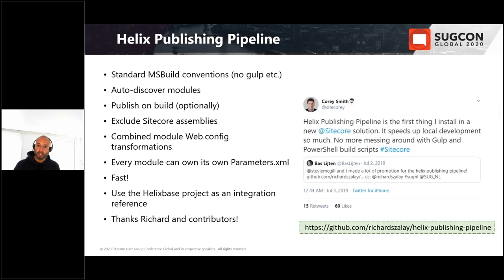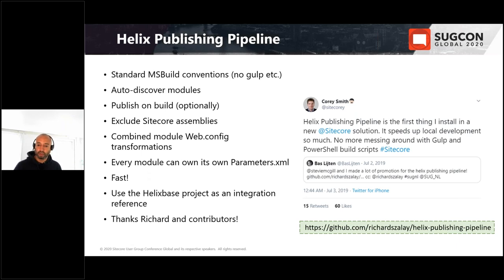The Helix Publishing Pipeline provides auto module discovery, optional publish-on-build, exclusion of Sitecore assemblies, and per-module parameters.xml files. There is a Helix-based example project on GitHub that's an excellent integration reference — HPP is part of that, and it was very useful for getting HPP integrated into my solution structure.